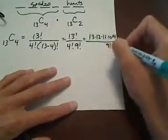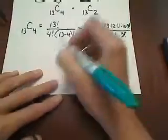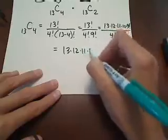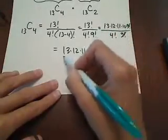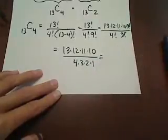And so really what we're looking at is 13, 12, 11, 10, and then over 4, 3, 2, and 1. Okay, so that ends up being divided by 24.